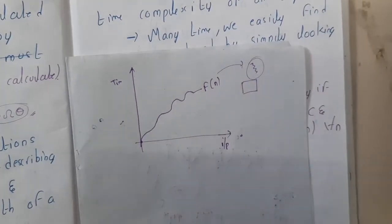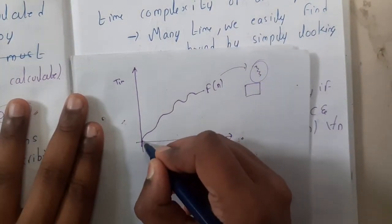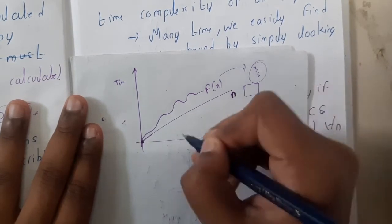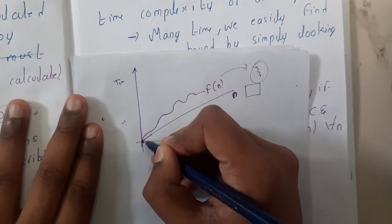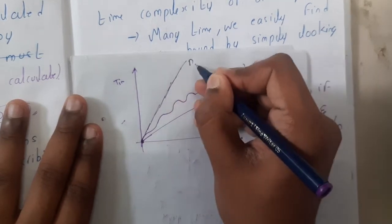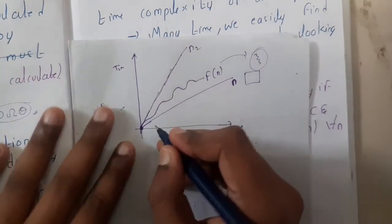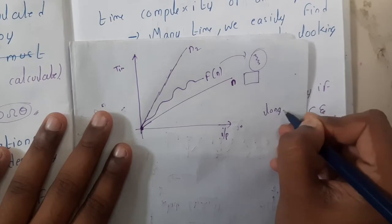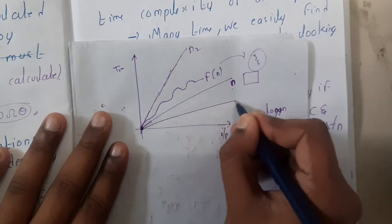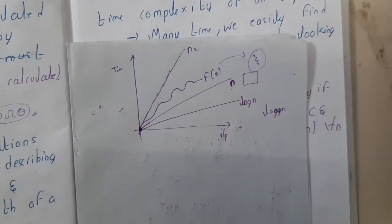Once you have an idea of how the function is acting, you compare it with reference functions. n will be somewhere like a straight line; n² will increase more rapidly. log n will always be less than n, so it will be somewhere below. I'm drawing with straight lines for easy understanding.